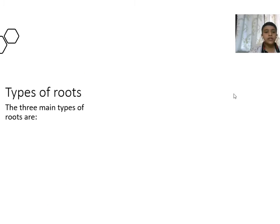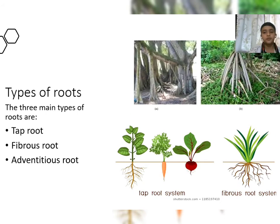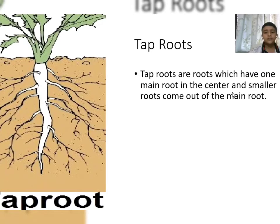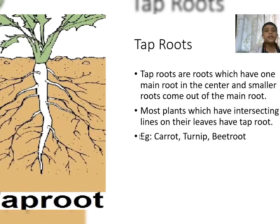The three main types of roots are tap root, fibrous root and adventitious root. Tap roots have one main root in the center with smaller roots coming out of it. Most plants which have intersecting lines on their leaves have tap roots. Examples: carrot, turnip, beetroot.